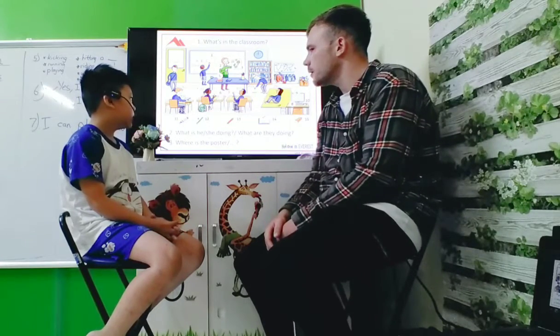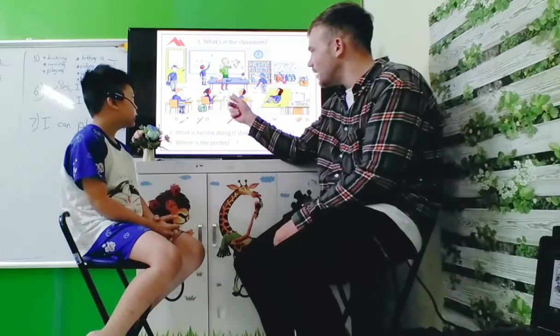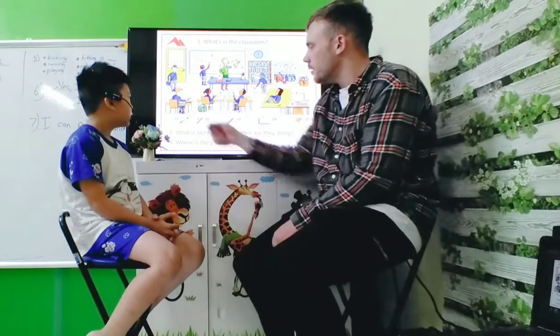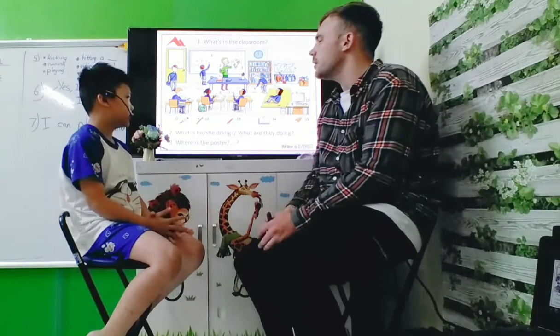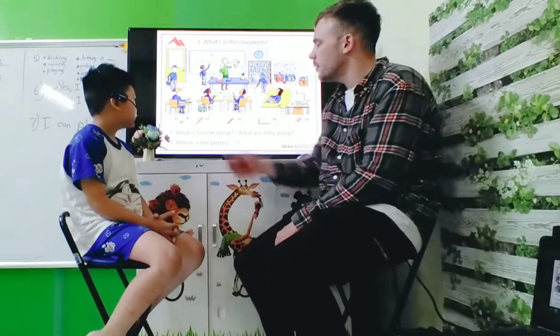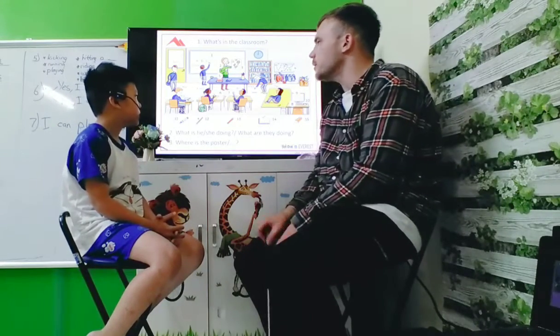There is a stool. There is a ruler. Yes. What are these? There are chairs. There are chairs and? There are tables. There are tables. Good.